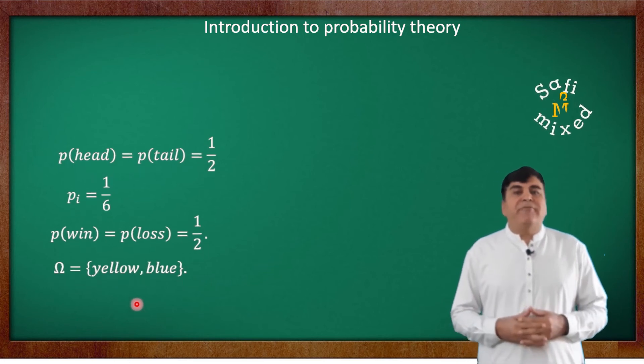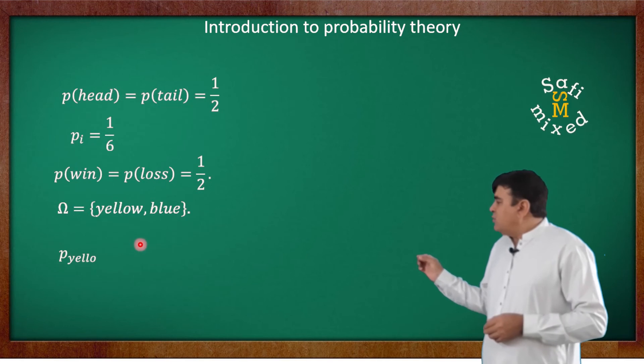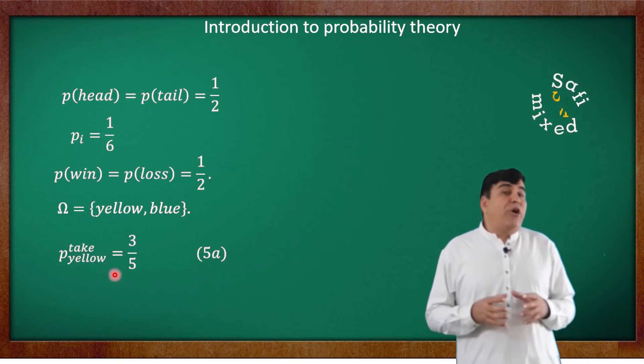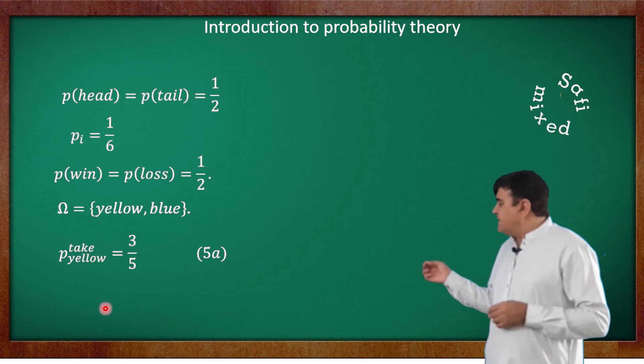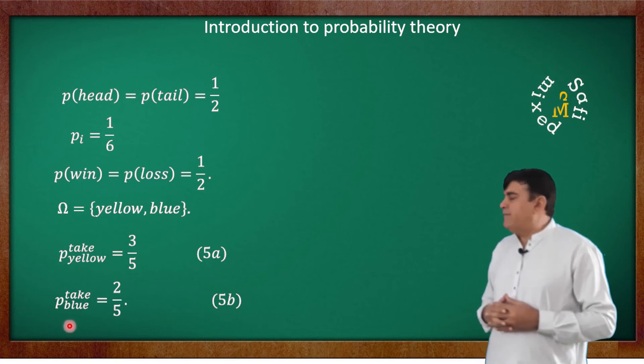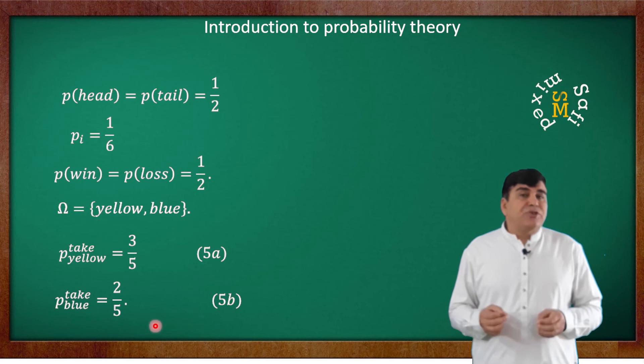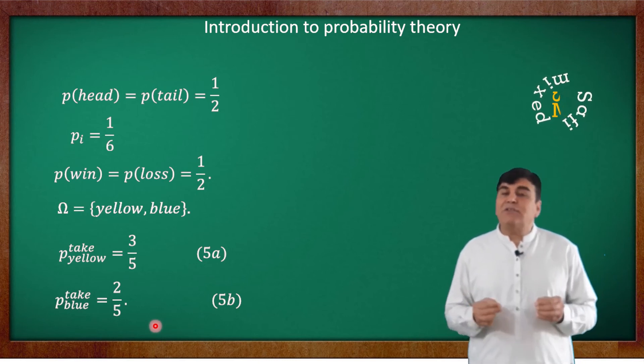So the probability of yellow pick is written as P(yellow) = 3/5, and that of a blue pick, the probability can be expressed as P(blue) = 2/5. We see that the probability mass function of a pick corresponding to a color is not uniform.